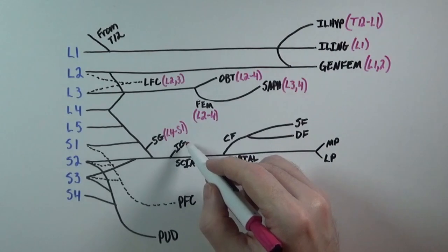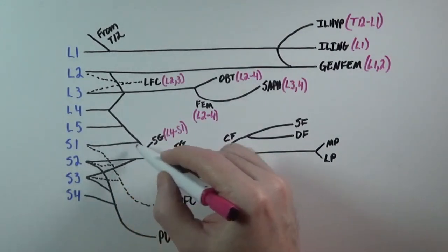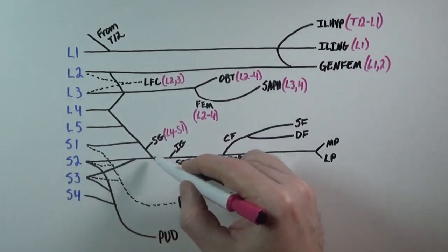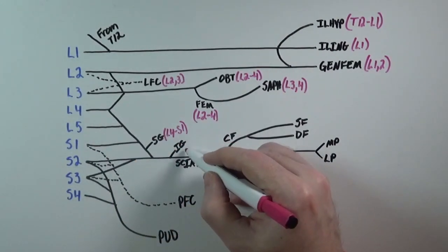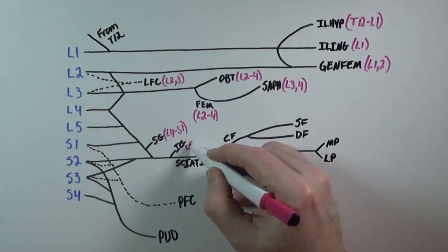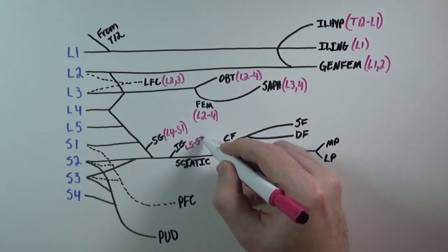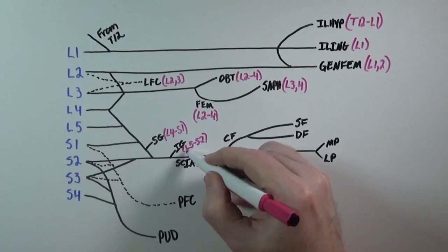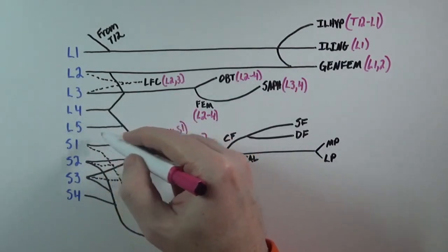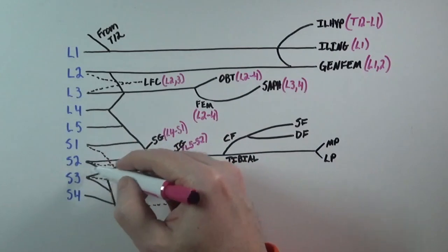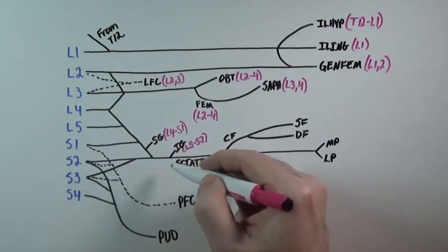The inferior gluteal nerve will come from L5, S1, and S2. The sciatic nerve, on the other hand, comes from L4, L5, S1, S2, and S3.